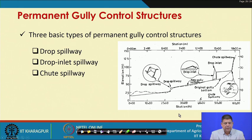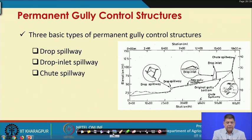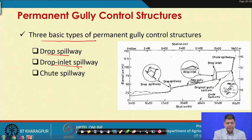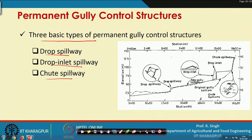For a quick recap, in the previous lecture we discussed permanent gully control structures. We saw that there are three basic types: drop spillway, drop inlet spillway, and chute spillway. We also covered their various components, advantages, disadvantages, adaptabilities, and an inter-comparison. Today we will go into design considerations.